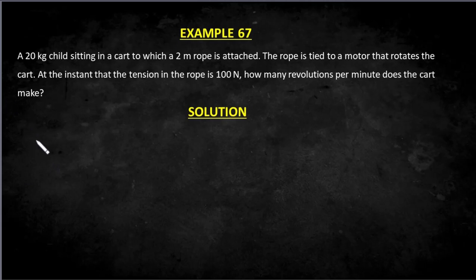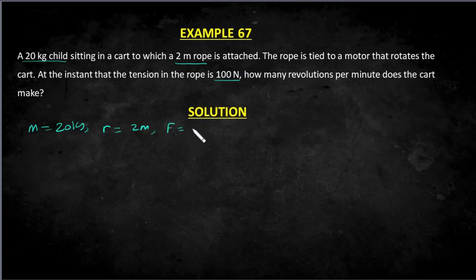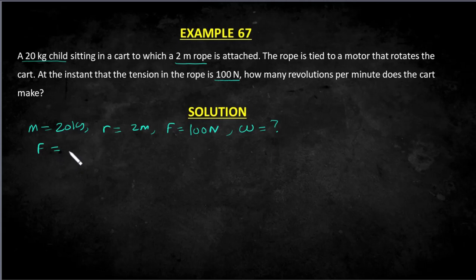Now let's look at the second example, example 67. A 20 kilogram child sits in a cart to which a 2-meter rope is attached. The rope is tied to a motor that rotates the cart. At the instant that the tension in the rope is 100 newtons, how many revolutions per minute does the cart make? The mass is 20 kg, the radius is 2 meters, and the centripetal force provided by the rope is 100 newtons — because without the rope there would be no circular motion.